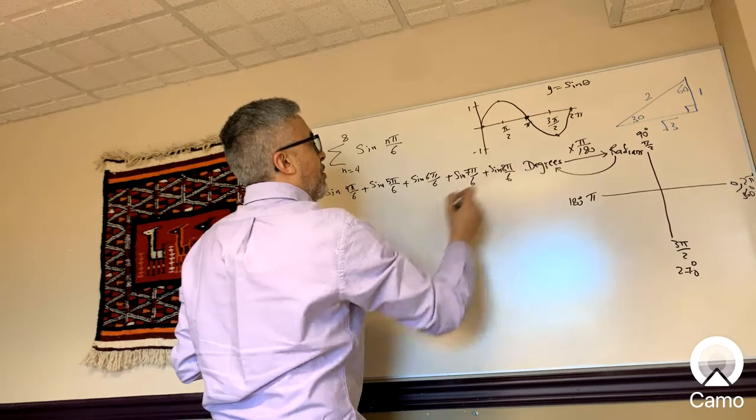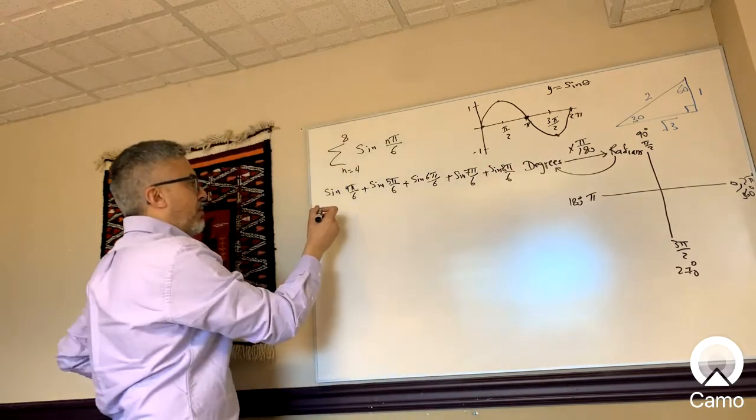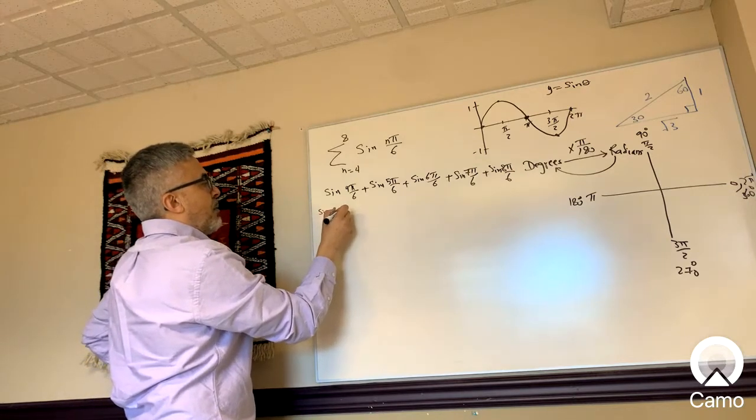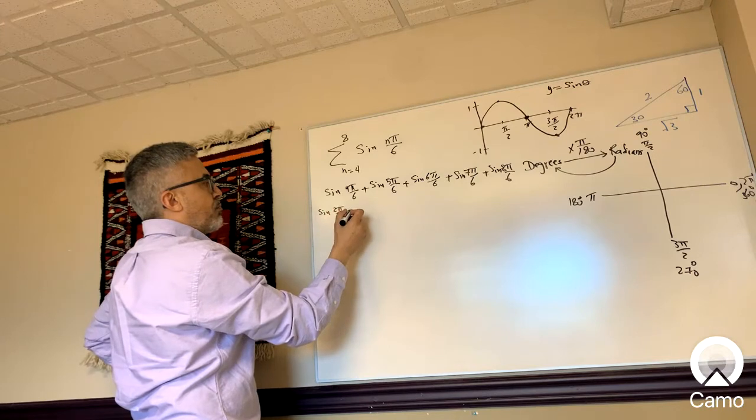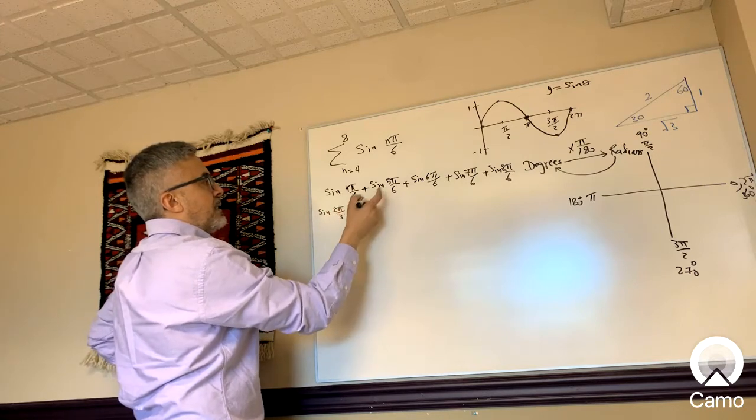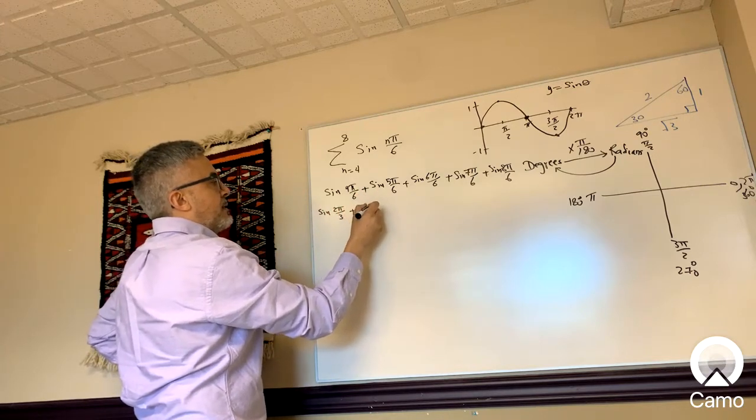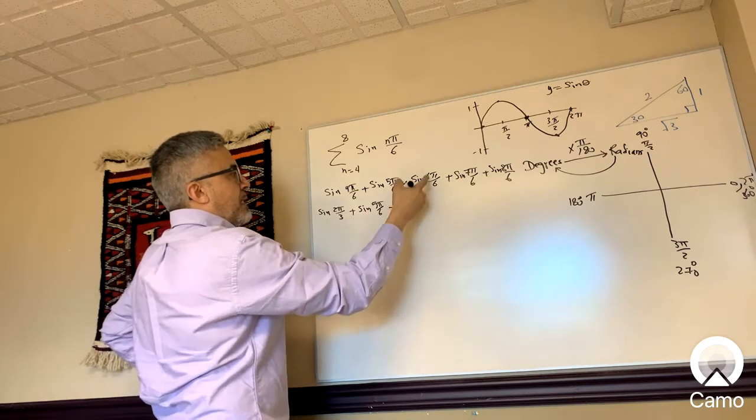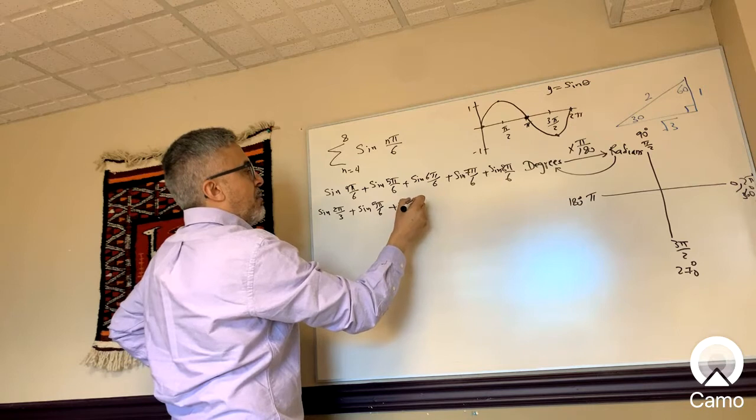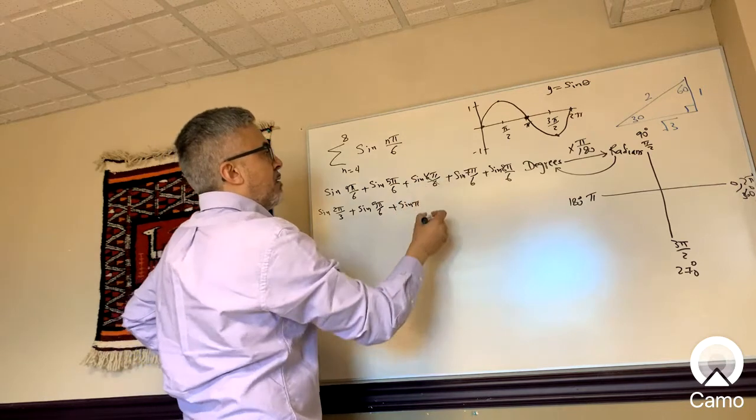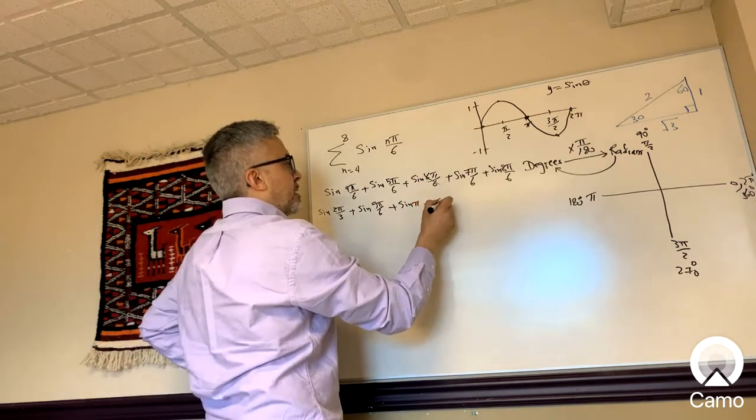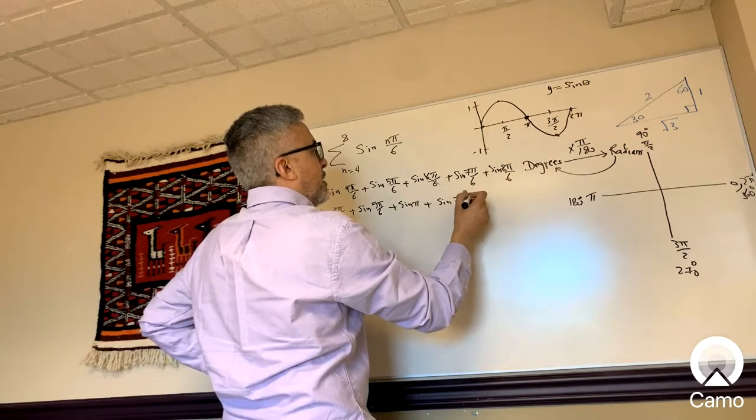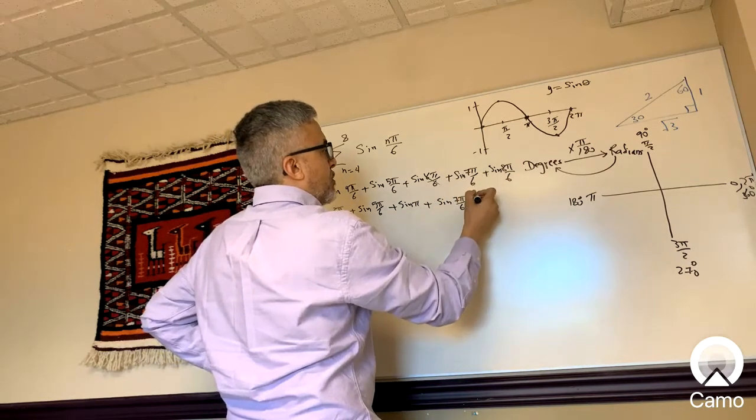Now start simplifying: this will be sine 2π/3 plus 5π/6 plus sine π plus sine 7π/6.